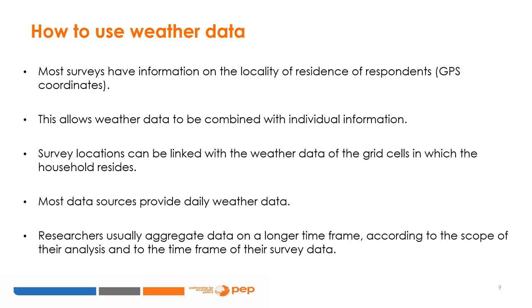For instance, an agricultural shock in a rural zone has a stronger impact on farmers' livelihoods when it happens during the agricultural season. When interested in measuring the effect of a drought on a rural population, researchers might want to aggregate rainfall data over the agricultural season only, without considering data on rainfall outside the agricultural season.